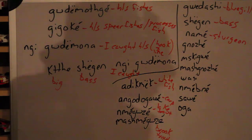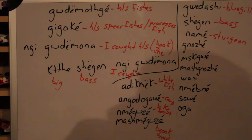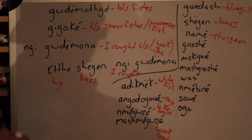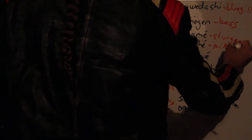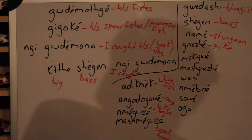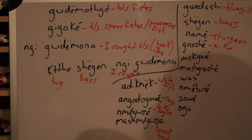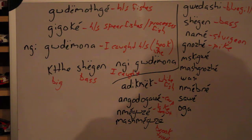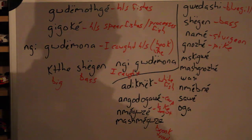Below there we have goudashi. Goudashi is a northern pike. Below that we have mskégwazé — mskégwazé is a crappie.